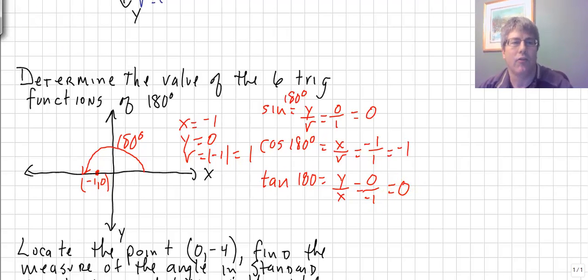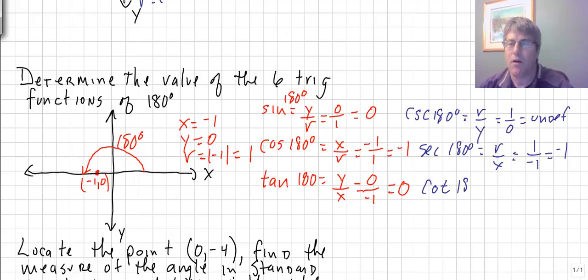And then we can go ahead and do our reciprocal functions as well. So the cosecant of 180 is equal to r over y, or 1 over 0, so that would be undefined. The secant of 180 equals r over x, which is 1 over negative 1, so that's negative 1. And then the cotangent of 180 equals x over y, so that is negative 1 over 0, and that is undefined.